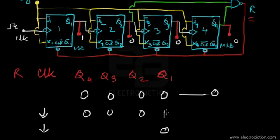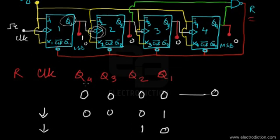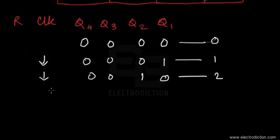Upon the arrival of the second clock pulse's negative edge, the output of flip-flop 1 toggles back to logic 0. Since Q1 was at logic 1, when it transitions from logic 1 to logic 0, the clock input of flip-flop 2 experiences this falling edge and toggles to logic 1. This is how the counter progresses from state 0 to state 1 and then state 2.